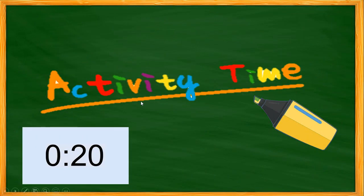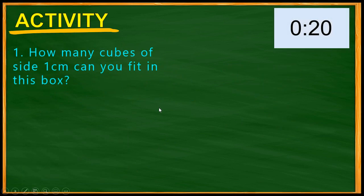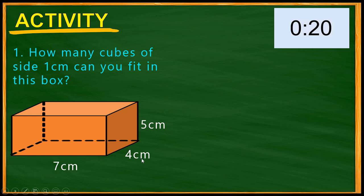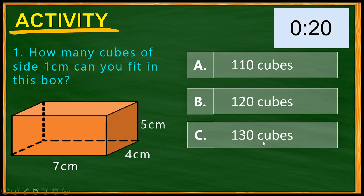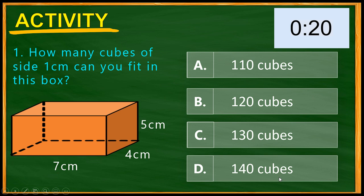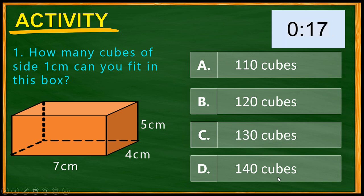Now for our activity. Question 1: How many cubes of one centimeter can you fit in a box with dimensions 7 cm, 4 cm, and 5 cm? Choices: A) 110 cubes, B) 120 cubes, C) 130 cubes, D) 140 cubes. You have 20 seconds. Time's up! The correct answer is D — 140 cubes.